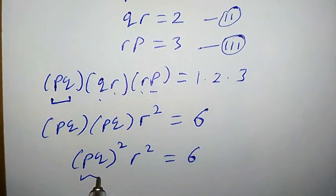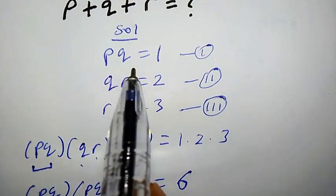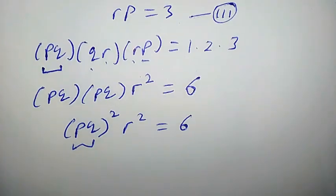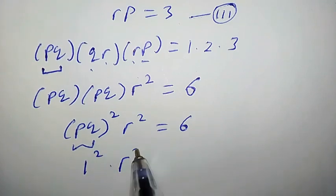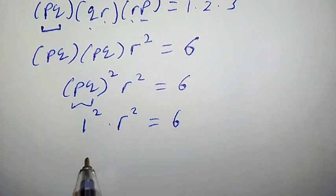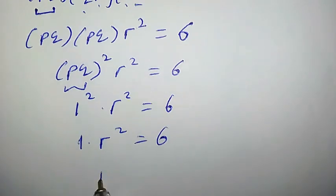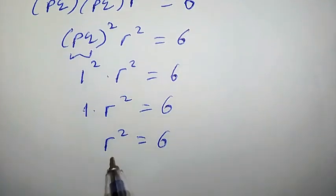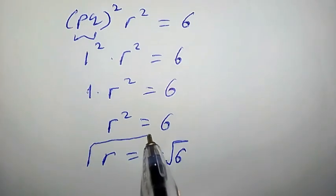But what is PQ? From equation 1, PQ equals 1. Let us plug that in. So we have 1 squared times R squared equals 6. 1 squared is simply 1, so R squared equals 6. Taking the positive square root of both sides, we get R equals plus or minus square root of 6.